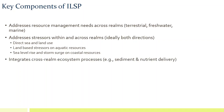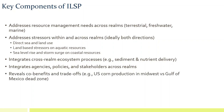We want to integrate cross-realm ecosystem processes — the actual beneficial aspects of, say, sediment and nutrient delivery. And then integrate the agencies, policies, and stakeholders across the realms. This is very important because planning and management across these different realms has tended to be very stove-piped. We also want to integrate tools and processes that can reveal both co-benefits and trade-offs between planning actions on the land and in the water. For example, U.S. corn production in the Midwest drives a lot of nutrient delivery down the Mississippi River into the Gulf of Mexico, which creates a large dead zone and significant impacts on fisheries production.